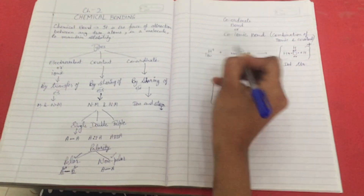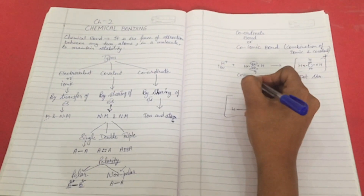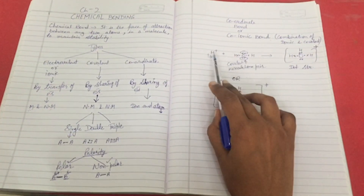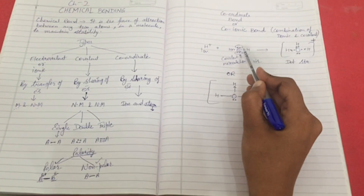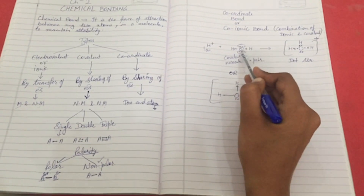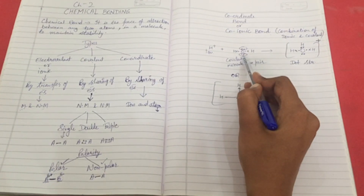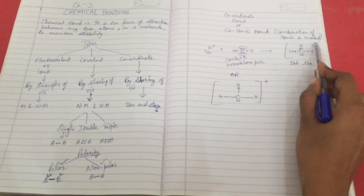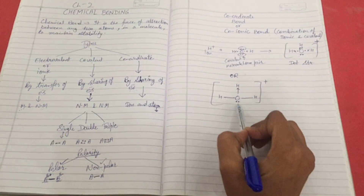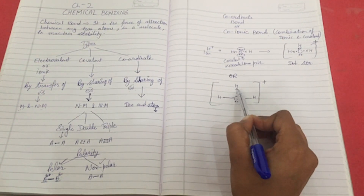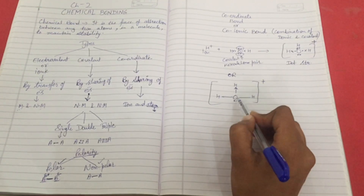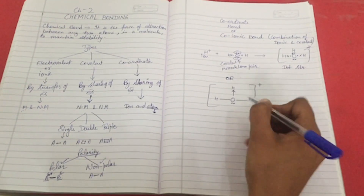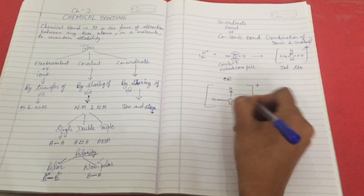Here, one is an ion and one is a covalent molecule. Looking at the dot structure of water, oxygen has lone pair electrons — electrons which are not shared with any atom. H⁺ will combine with water, giving a structure where oxygen provides both electrons for sharing; this bond is the coordinate bond, while the others shown are covalent bonds.